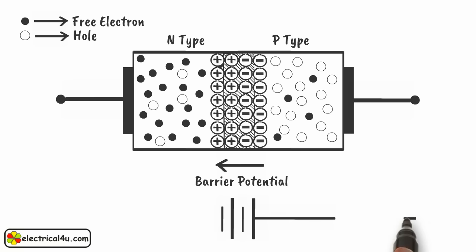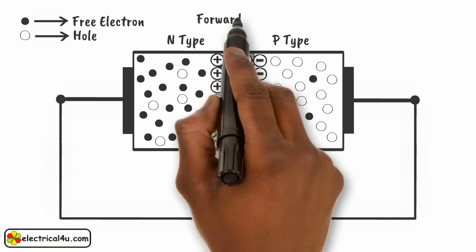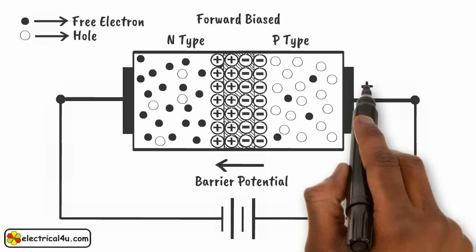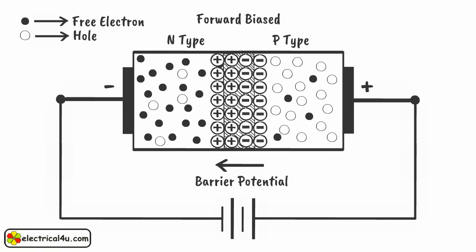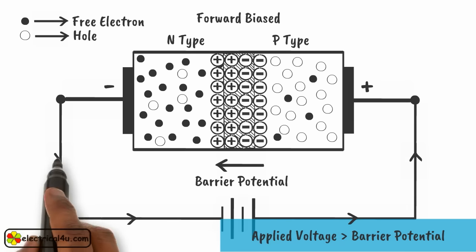Now we connect the positive terminal of the voltage source to the link connected to the P-type side, and the negative terminal to the link connected to the N-type side. In this condition, the diode is said to be in forward biased condition. There is a barrier potential across the junction that acts opposite to the forward applied voltage, so there is no forward current through the diode unless the magnitude of the applied voltage becomes more than the barrier potential. This voltage is referred to as forward bias voltage.